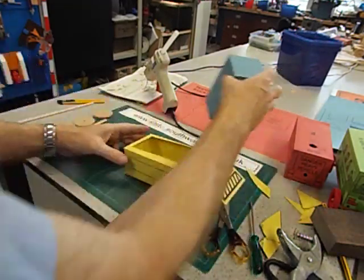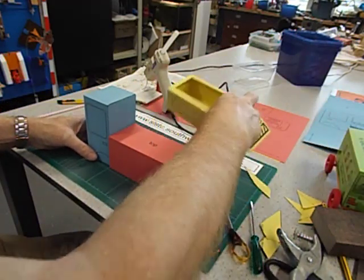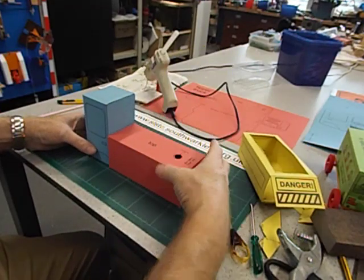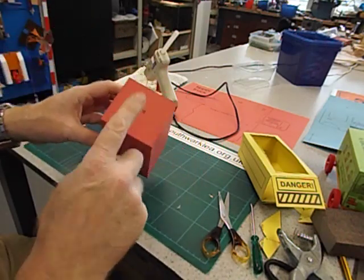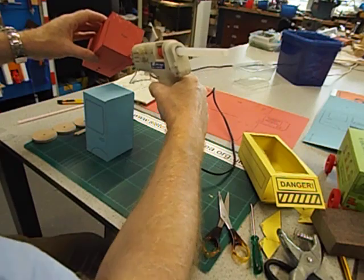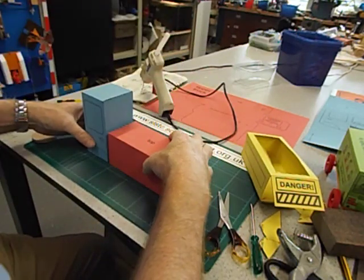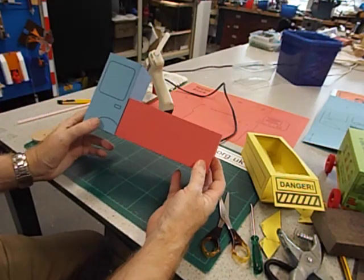So we've now got the cab, the back of the truck, and the tipper. I think the next thing we're going to do is to glue the cab onto the front. Make sure you do glue it onto the part labeled front. Again I'm going to use a glue gun. Make sure it's central. There we are, that's our cab glued on.